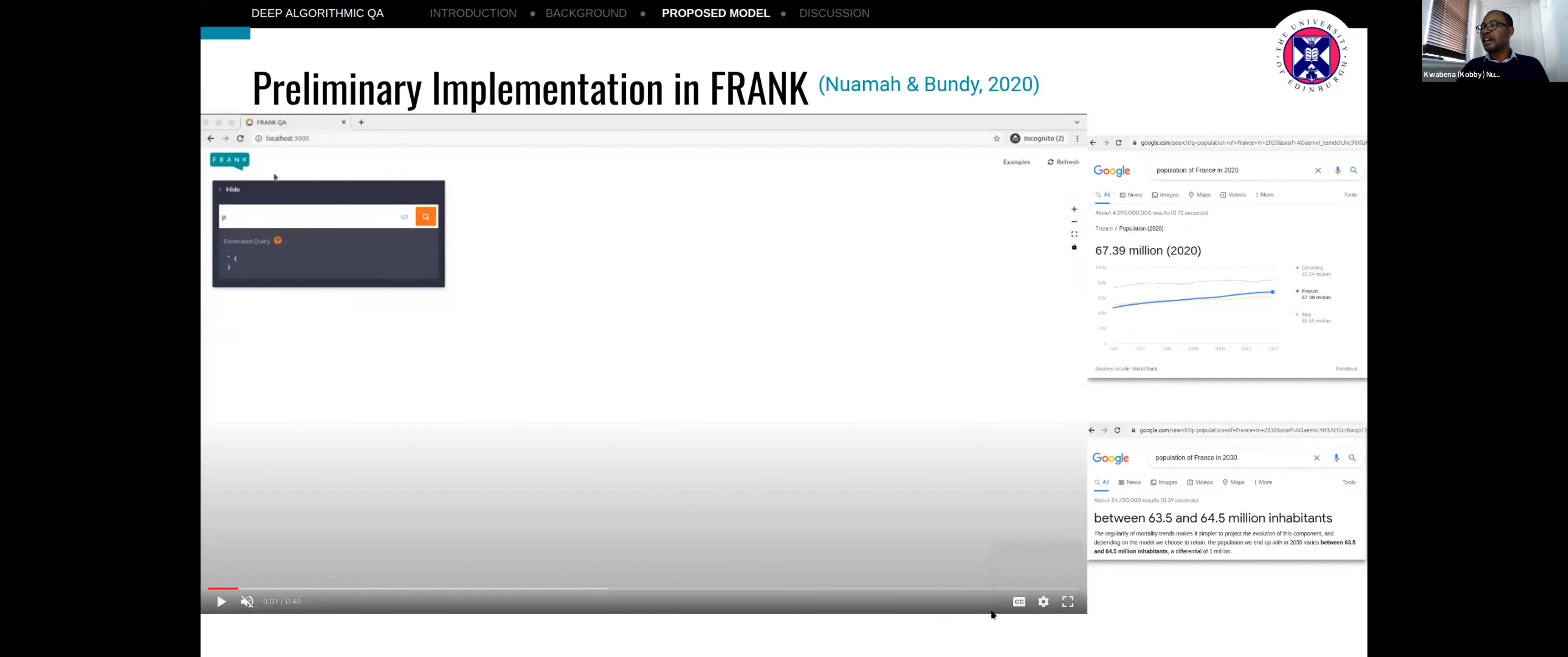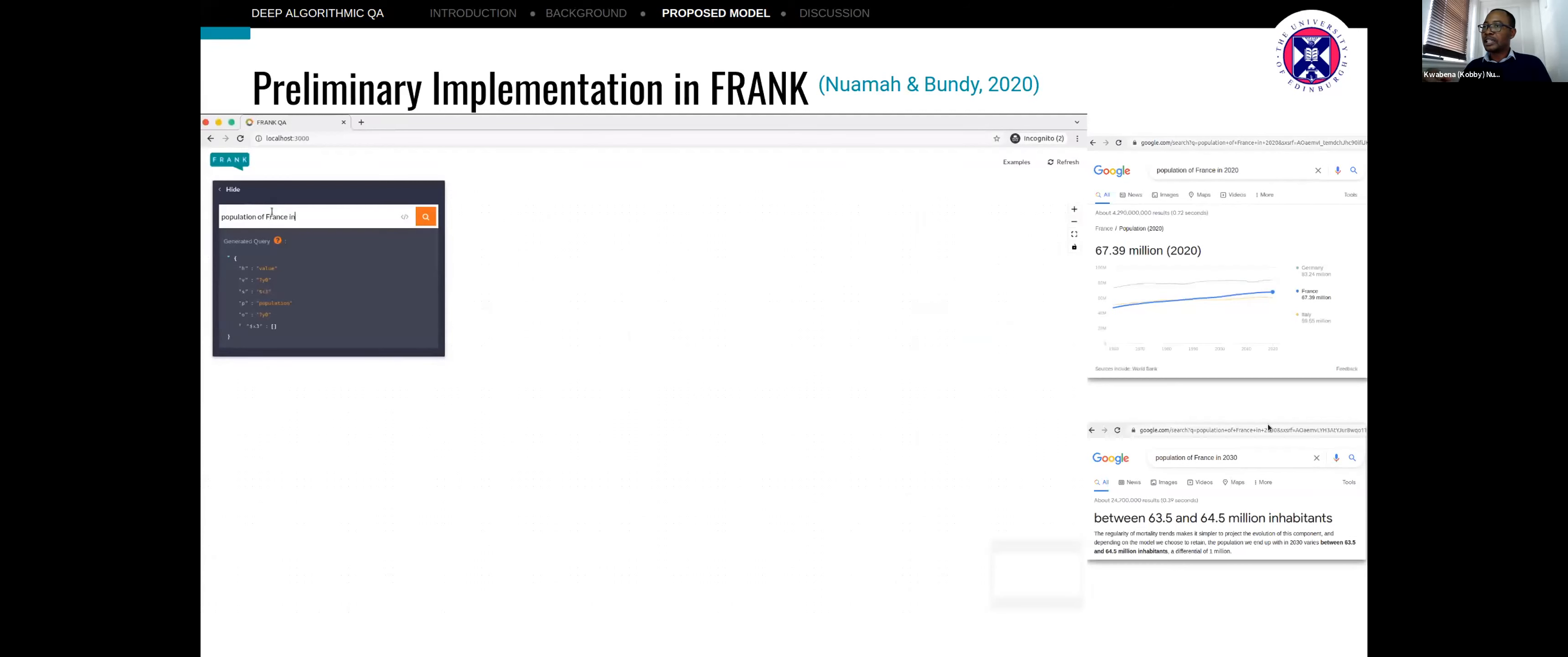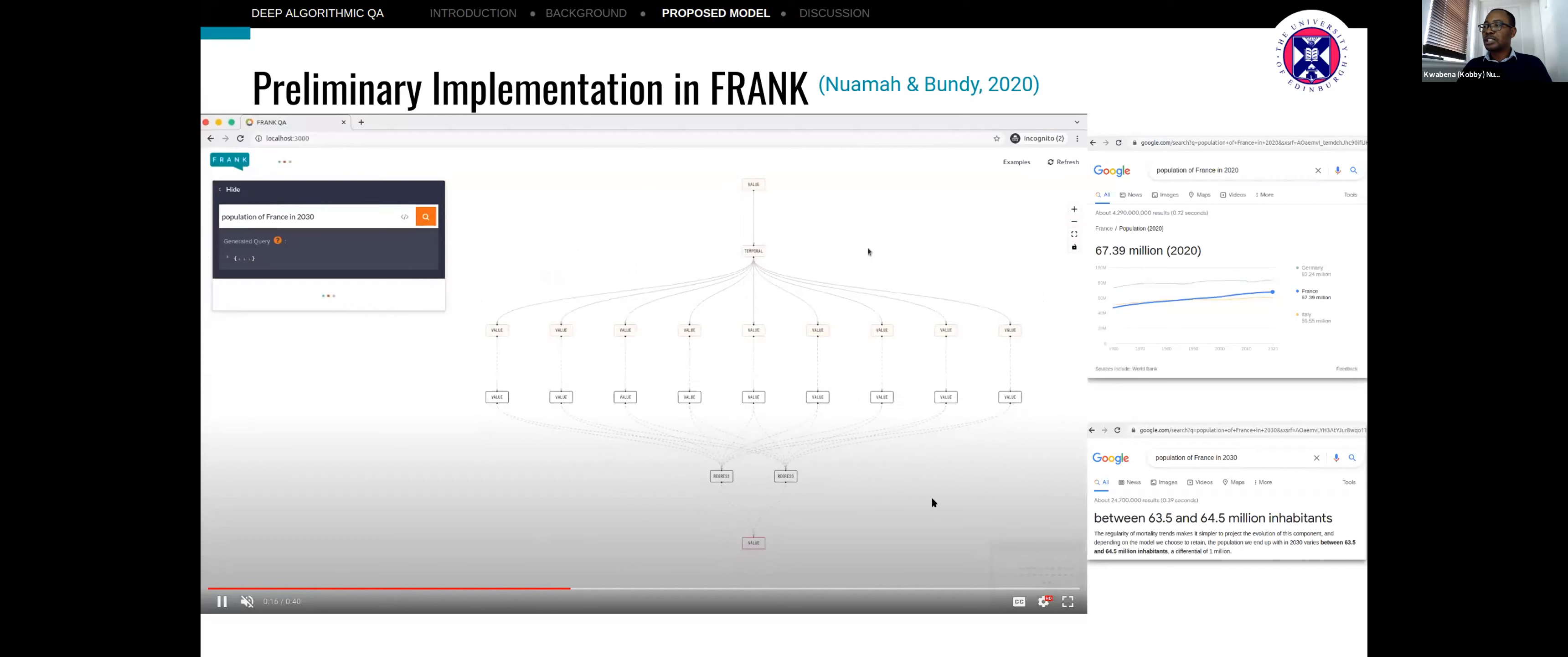Preliminary work so far on this problem is based on our work in the Frank question answering system. As you can see from the example here, we try to compose the inference graph dynamically. Once a question is posed and translated into some form of representation here, the functional nodes, which we call an association list, the system decomposes the problem.